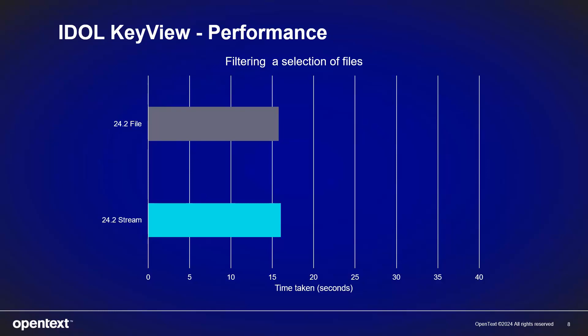Actual performance will vary a lot depending on your computer, your operating system, the formats of the files you are processing, and even the individual files themselves — which features of the format they use, as well as the operations you perform. Do you filter the text from the file? Do you extract sub files? Do you obtain metadata? Or do you just detect the format of the file? Choose a different set of files, a different environment, different operations, and you will see different results. However, our aim with 24.2 is that you can truly benefit from the responsiveness you get through streaming without the performance hit.